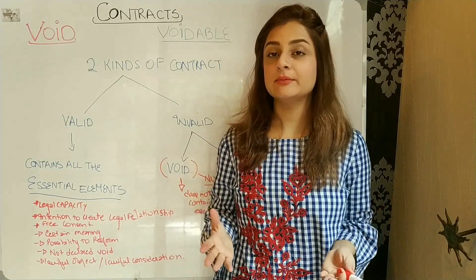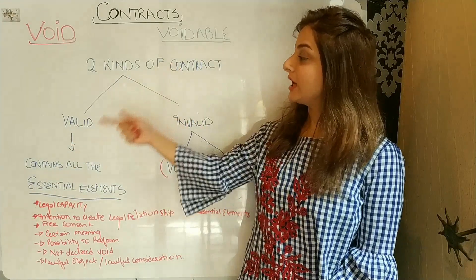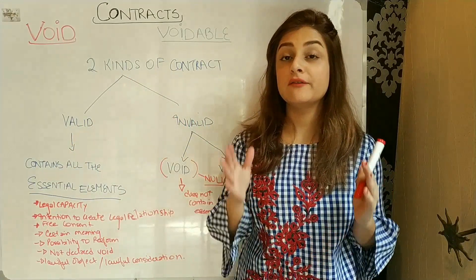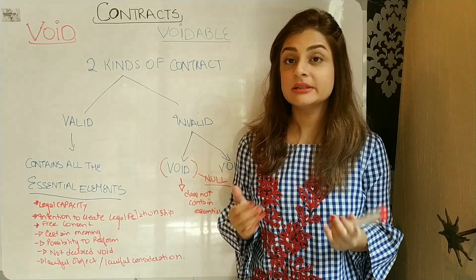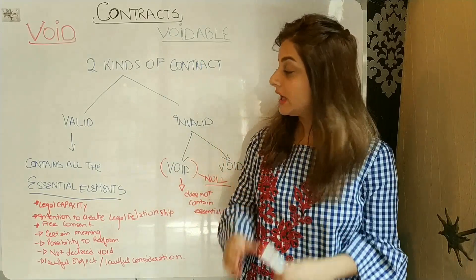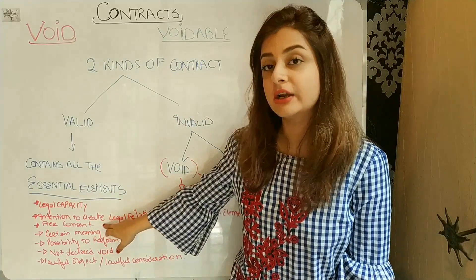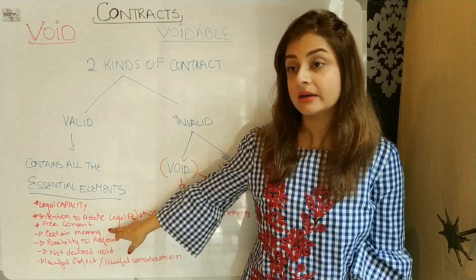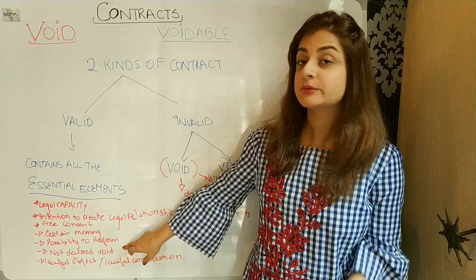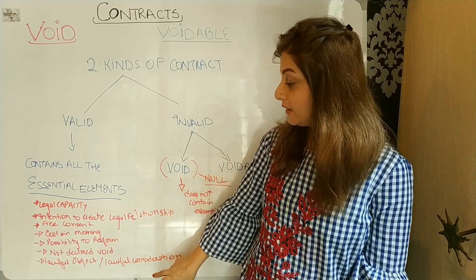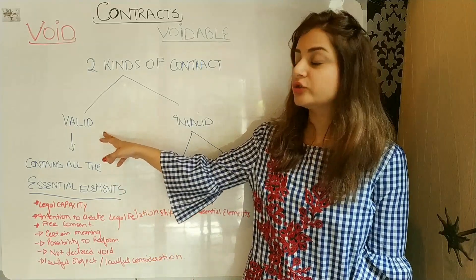Now let's see what types of contracts are. There are two kinds of contracts: one is valid contract and the other is invalid contract. A valid contract is one which contains all the essential elements of the contract — legal capacity, intention to create legal relationship, free consent, certain meaning of the agreement, possibility to perform, not expressly declared void by the statute, and lawful object and lawful consideration. When these things are present, your contract will be valid.